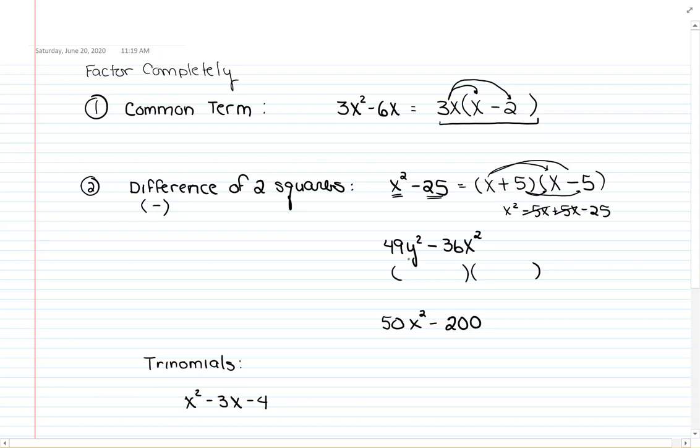I write down my two sets of parentheses. And then what number times itself will give me 49y²? That would be 7y times 7y. Negative 36, so the signs have to be opposites. And then 6x times 6x gives me the 36x².